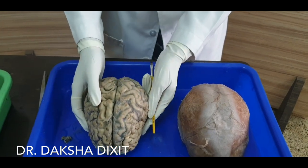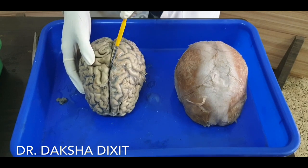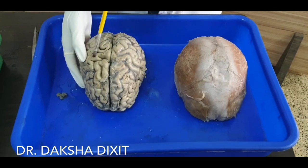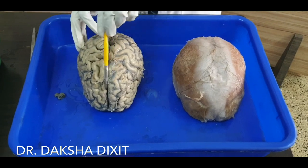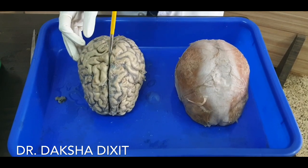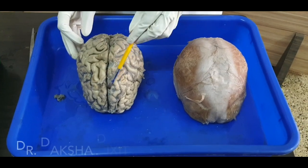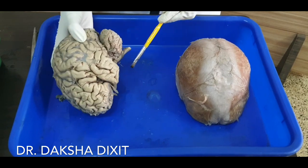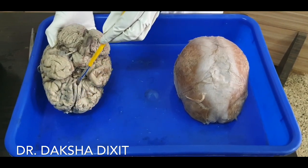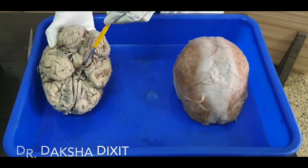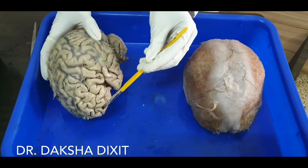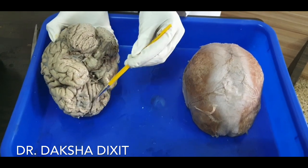Then we go on to see the three borders. This border here is the superomedial border. The two cerebral hemispheres are separated from each other by a midline depression called the median longitudinal fissure, and related to it is this superomedial border. Two more borders are seen on the inferior aspect: this border here is the inferolateral border, and this border at the inferior midline is the inferomedial border. So three borders: superomedial border, inferolateral border, and inferomedial border.